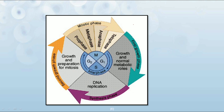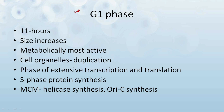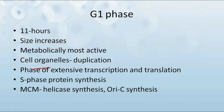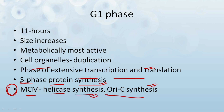This was the complete overview of the cell cycle. Now let us understand the four stages — G1, S, G2, and M phase — in a bit more depth. The first is the G1 phase, which lasts for 11 hours. There occurs an increase in size; it is the metabolically most active phase. In this phase, cell organelles get duplicated, and there occurs extensive transcription and translation. S phase protein synthesis also occurs in this phase, along with MCM helicase synthesis and Oric synthesis.